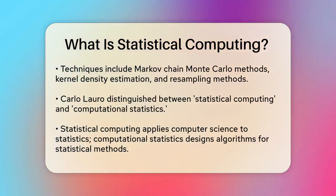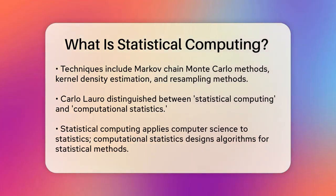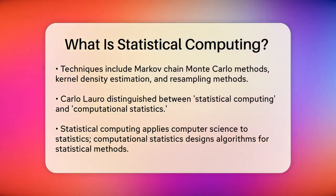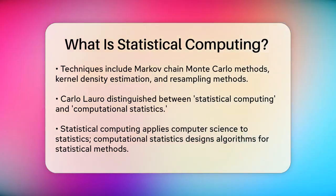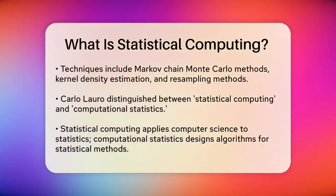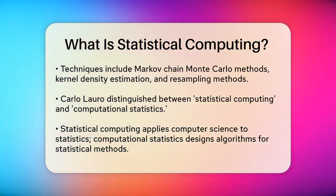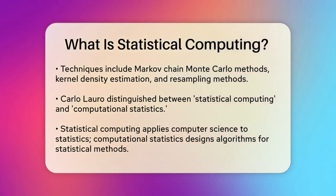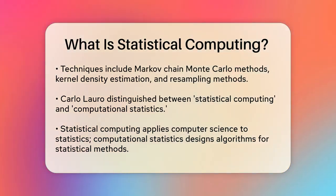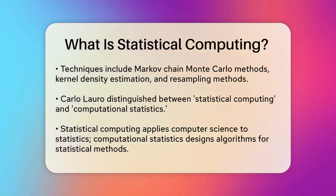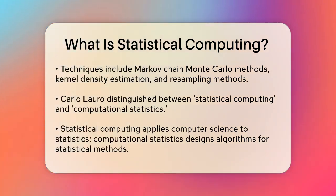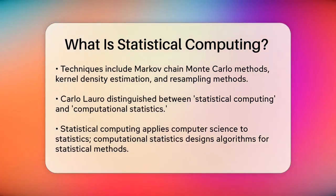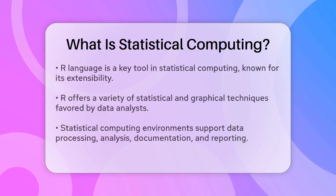One key figure, Carlo Lauro, a former president of the International Association for Statistical Computing, distinguished between statistical computing and computational statistics. According to him, statistical computing is about applying computer science to statistics, while computational statistics focuses on designing algorithms for implementing statistical methods on computers. This includes methods that were impossible before the advent of powerful computers.